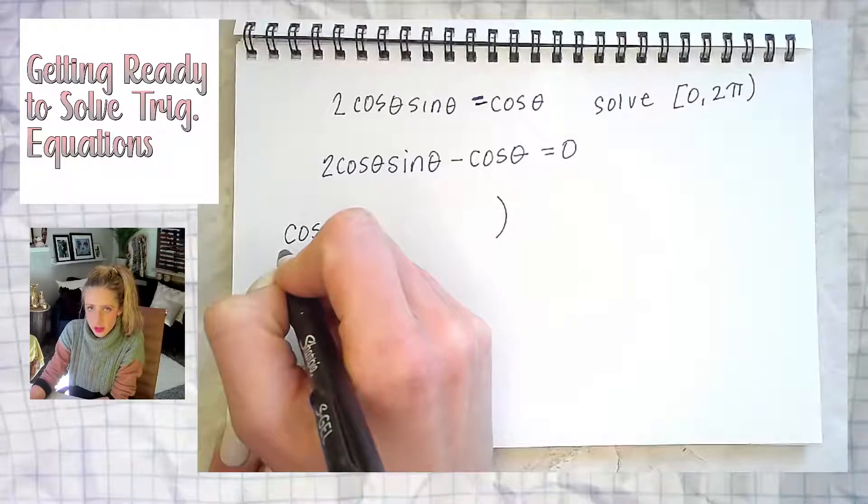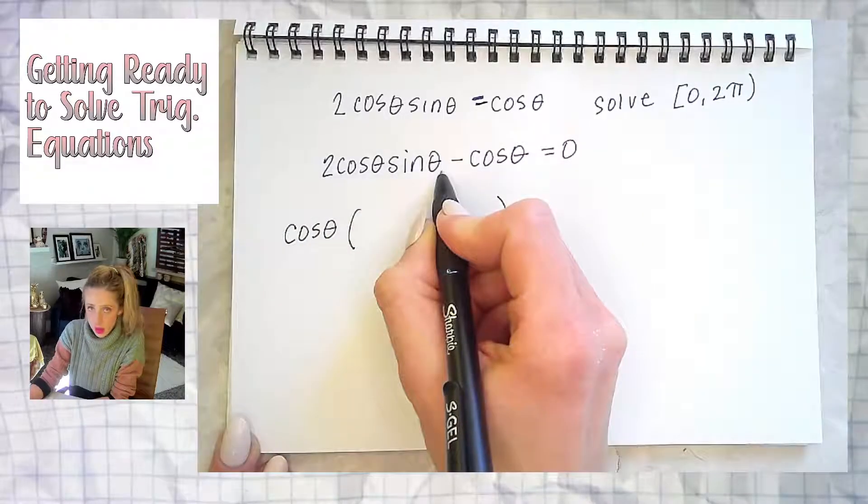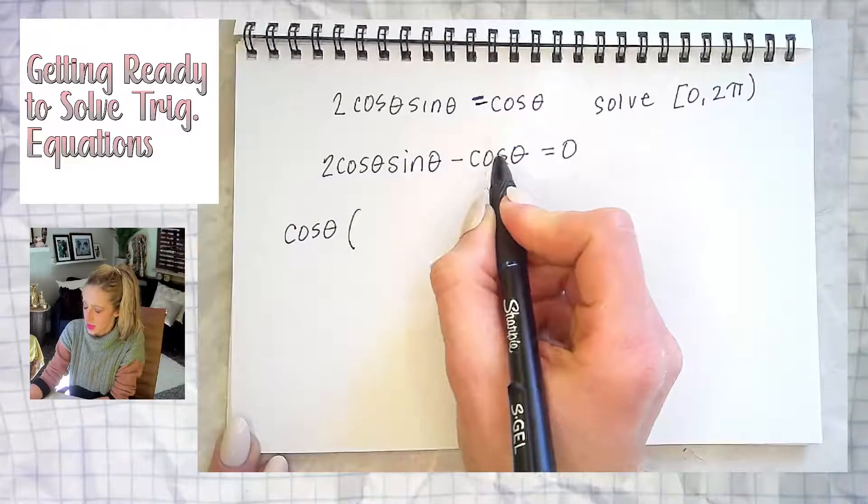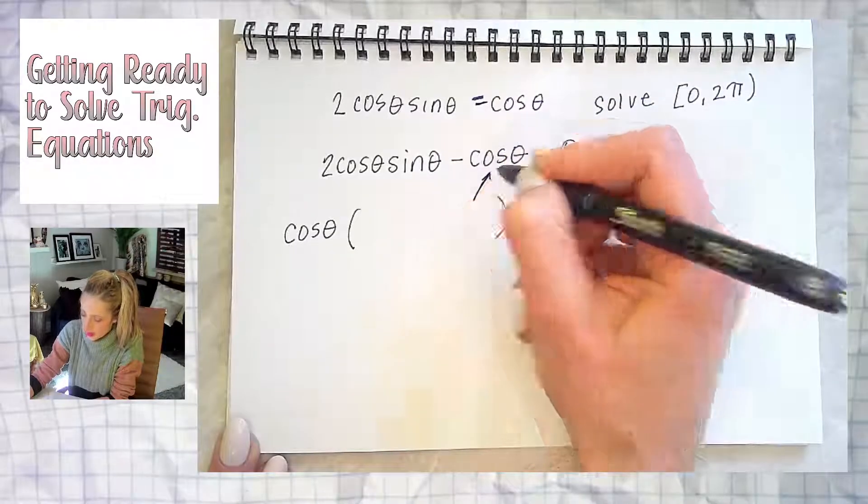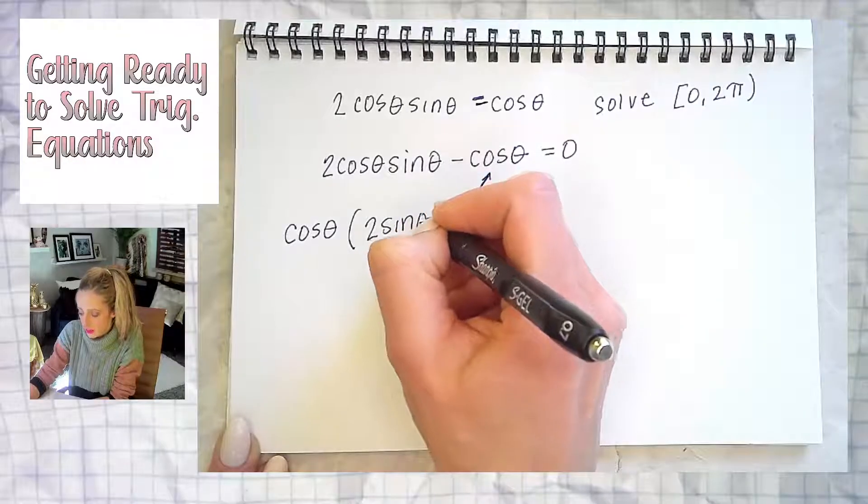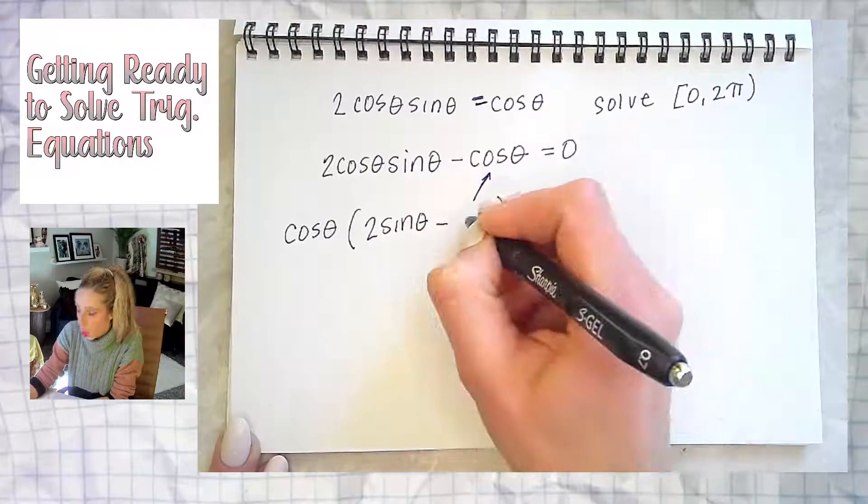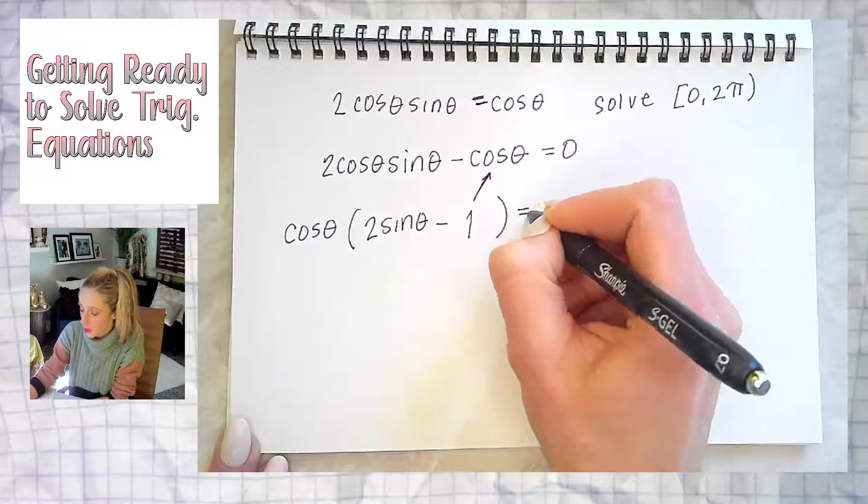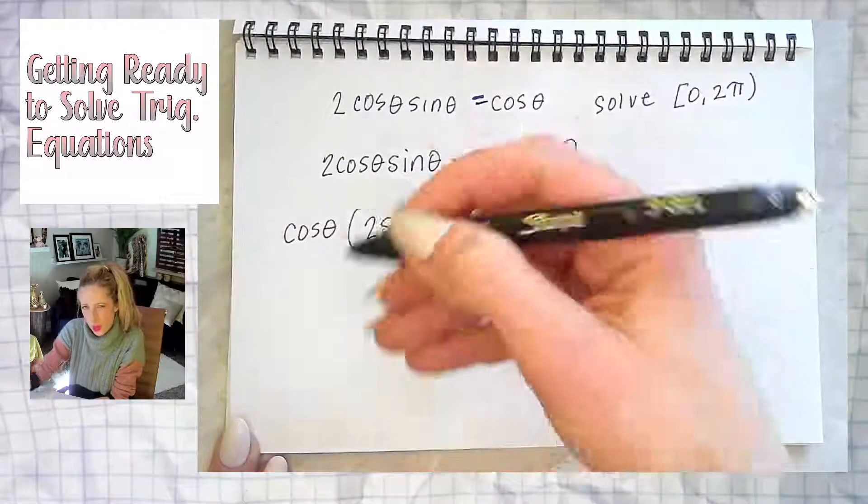My greatest common factor is cosine theta. This expression has one and so does this. Don't get weird about what's left behind right there. Here you're left with two sine theta. Here you're left with one, not a zero. If you put zero, what would you distribute back to go backwards?